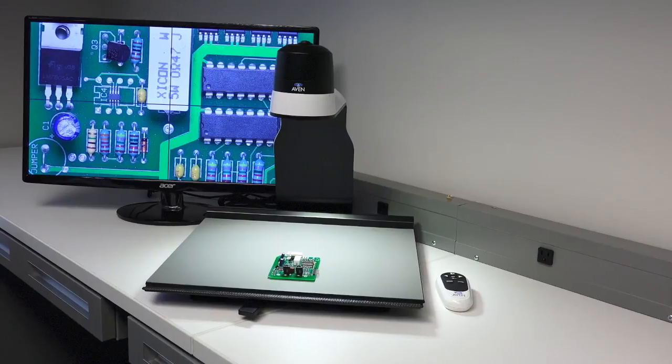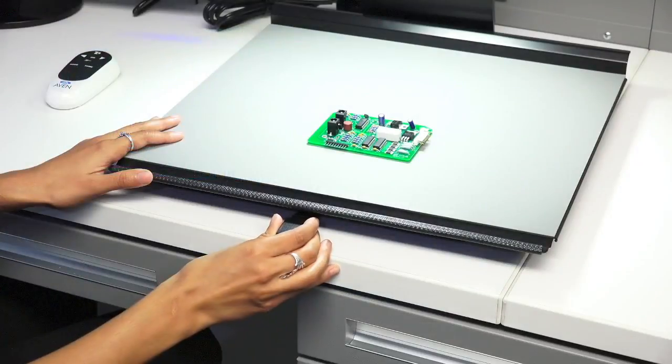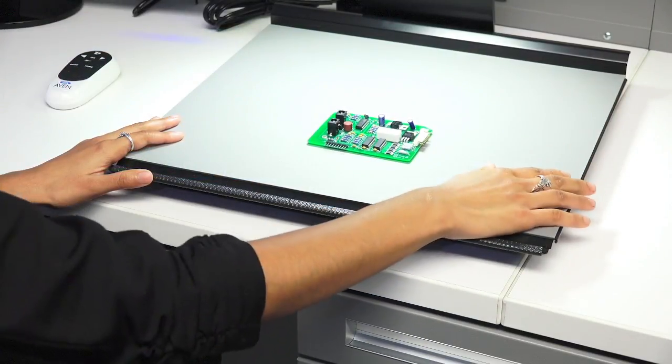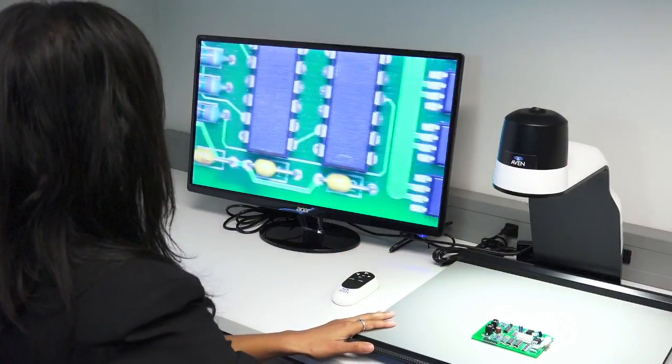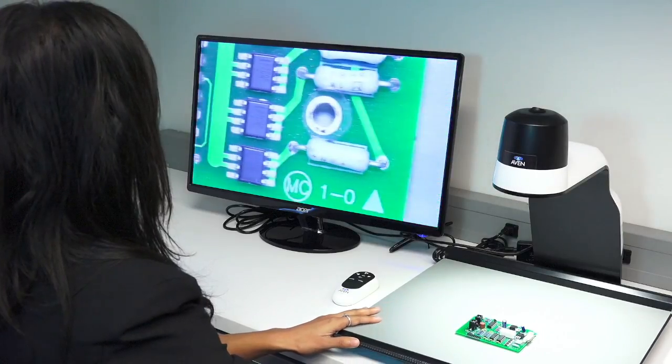Also available is our XY inspection table, designed specifically for the SharpView system. The XY table provides steady control of the magnified image. It's easy to move in either direction and can also be locked in place. The table plate is covered with an ESD safe material.